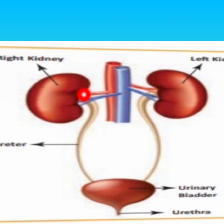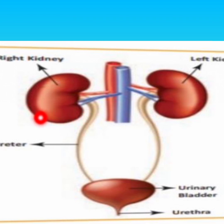The kidneys are made up of millions of excretory units called nephrons. Nephrons are the structural and functional unit of the kidney.